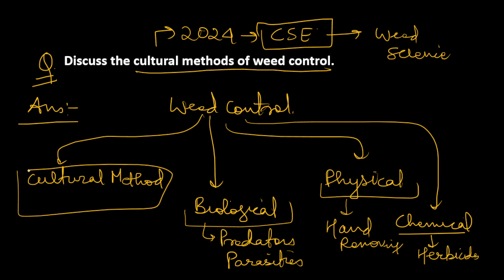Today we will be discussing cultural methods. What are the things which we can incorporate in cultural methods? First of all, we can do crop rotations. These are the various methods through which we can do cultural control of weeds.